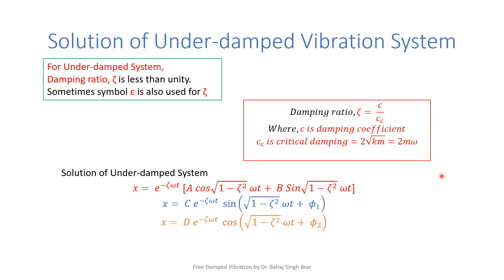The solution for the underdamped system can be written in three forms. First: x = e^(−ζωt) [A cos(√(1−ζ²)ωt) + B sin(√(1−ζ²)ωt)]. Second: x = C·e^(−ζωt) sin(√(1−ζ²)ωt + φ), where a phase difference is added. Similarly, the solution in cosine terms: x = D·e^(−ζωt) cos(√(1−ζ²)ωt + φ₂).